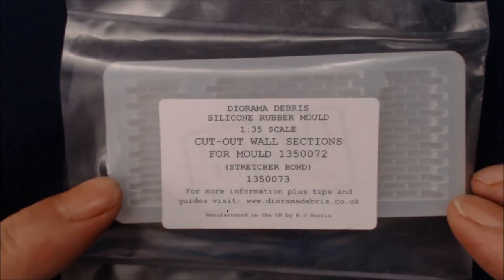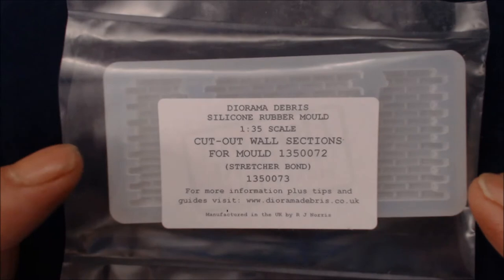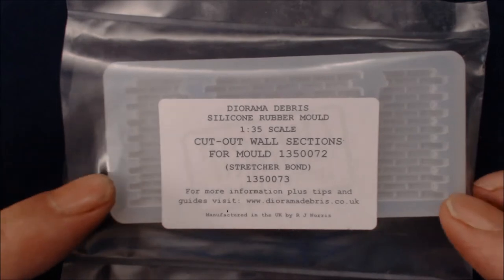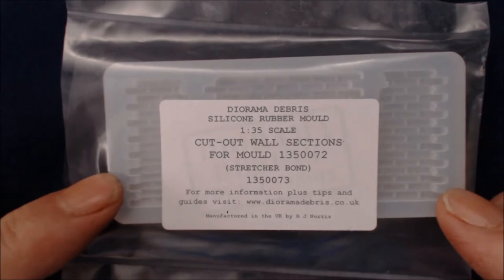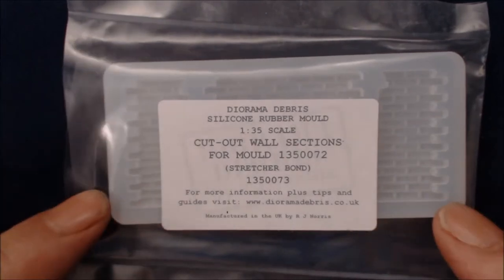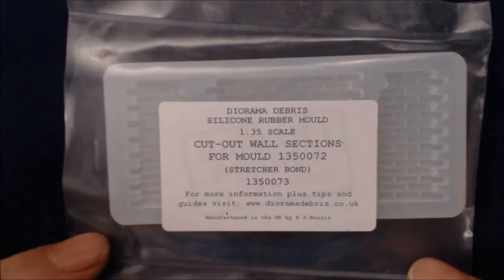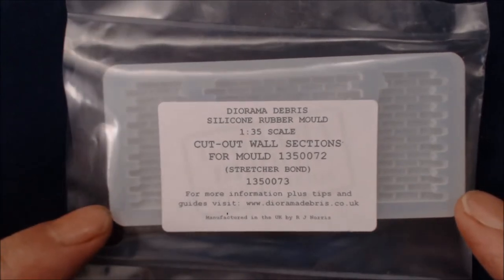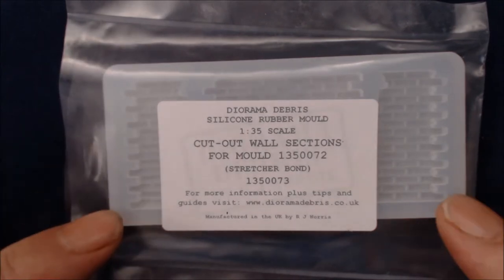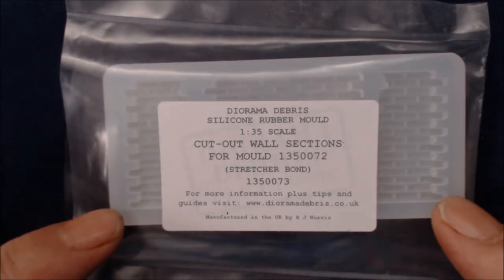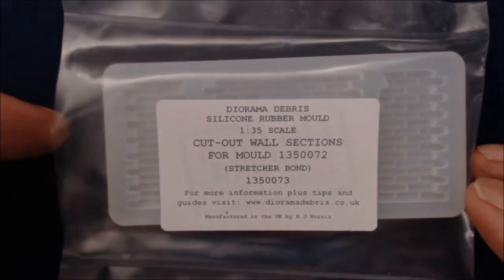Now this is a cut-out wall section for a mold 1350072, and if you don't know what mold that is, that is the Victorian arch one. This is Duncan's Treacher Bond. The mold number for this particular mold is 1350073. Manufactured in the UK by R.J. Norris. And we'll get it out of the bag.